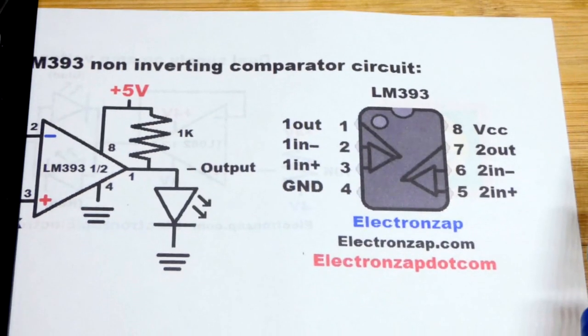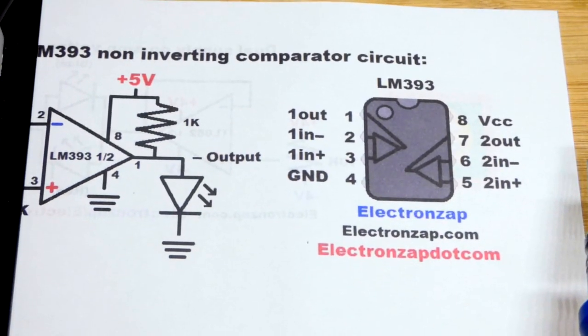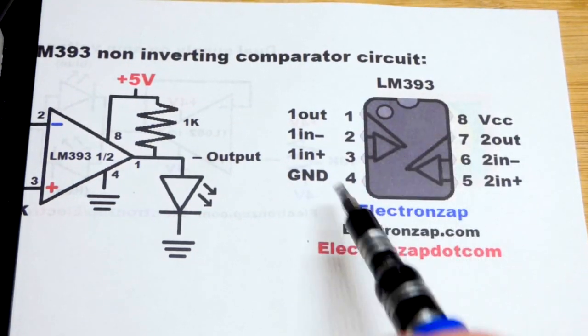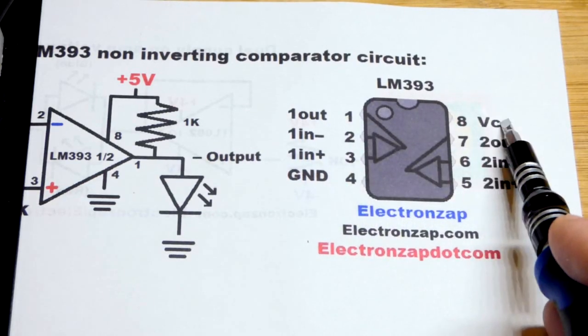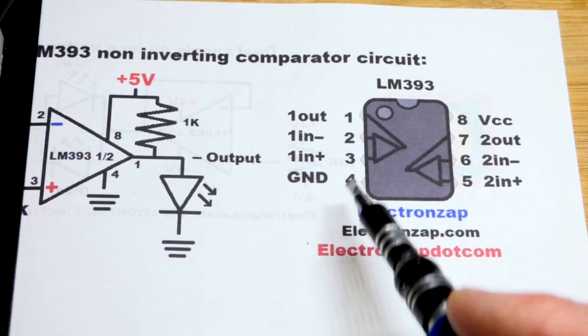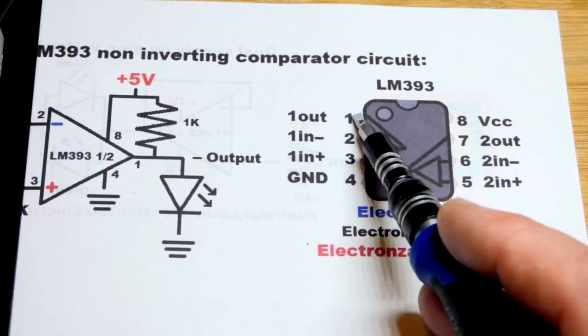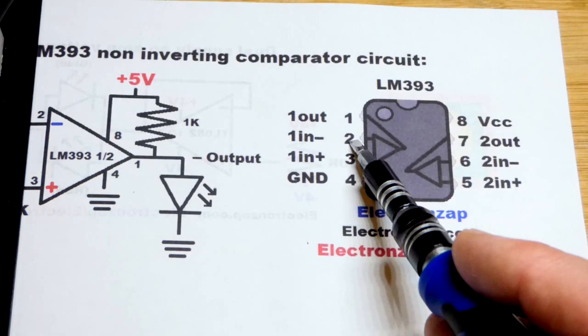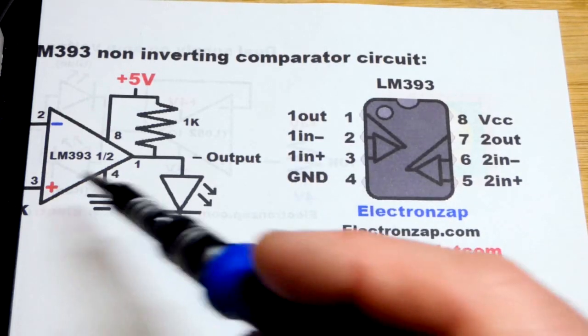Here is the pin layout. We have the LM393. We need to power it pin 8 to positive and pin 4 to negative or ground. Output is the top pin. Then we have the inverting input below that and the non-inverting input. Sometimes on schematics you'll see the numbers on there.